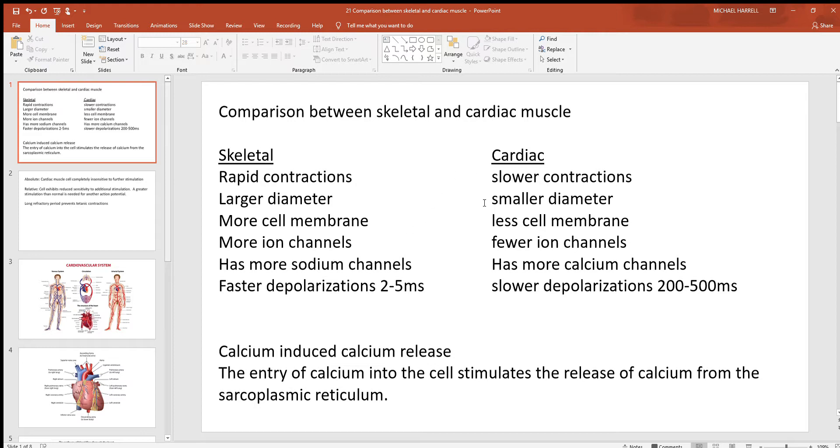You look at that compared to cardiac, smaller diameter will have less cell membrane and fewer ion channels in it. So the number of ion channels makes a big difference. More ion channels, more rapid depolarization, just the opposite with the cardiac.